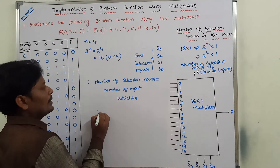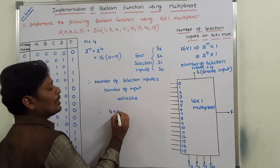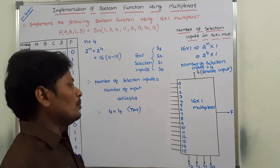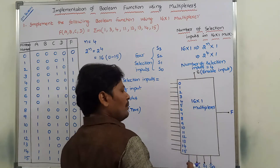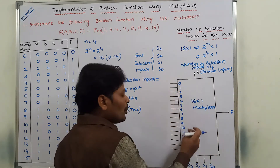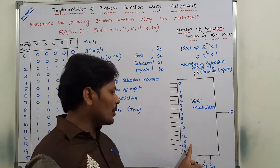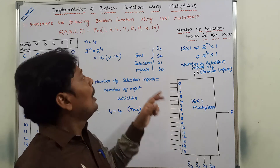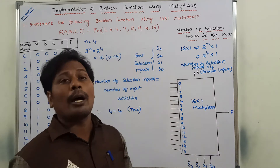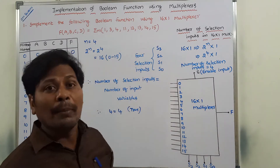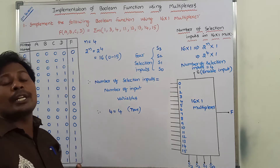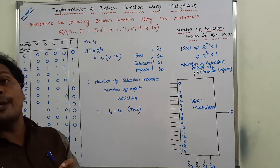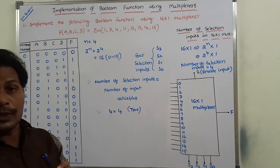Therefore, the number of selection input variables is 4 and the number of input variables is also 4. Now, in this 16-by-1 multiplexer, the 16 inputs each have a particular value. For the present minterms, the Boolean function produces output 1; for remaining minterms, the output is 0.